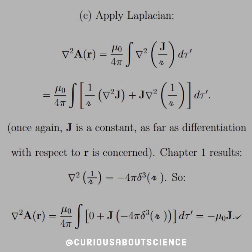Once again, j is a constant as far as differentiation goes with respect to r is concerned. So that first term goes to 0. And we remember that del squared of 1 over r from chapter 1 was equal to negative 4 pi delta cubed, the delta function.